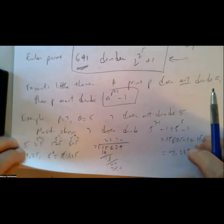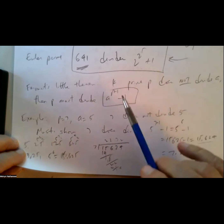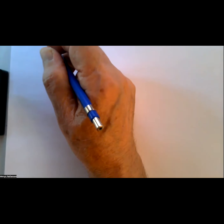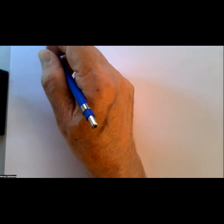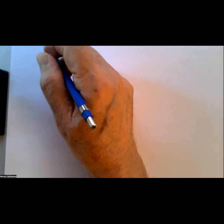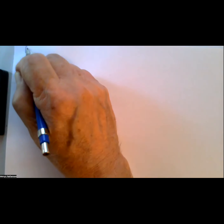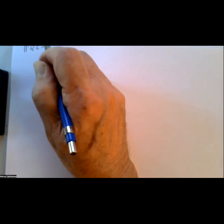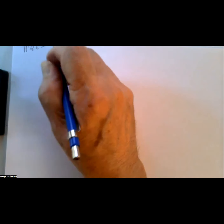Along the way to proving Euler's result, we need to prove Fermat's Little Theorem. This is done step by step in the book, divided into a series of small theorems. The text covers this starting on page 226 and ending on page 234. Let me go through them one by one.